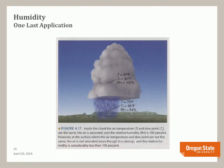One last application: it is commonly thought that if it is raining, the relative humidity is 100 percent. It may be 100 percent, but only if the air is saturated — meaning dew point temperatures and air temperatures are the same. Within the cloud where rain forms, the dew point temperature and air temperature are equal and the relative humidity is 100 percent. But closer to the ground, dew point temperatures and air temperatures are not the same, so the relative humidity is lower — though still pretty high.